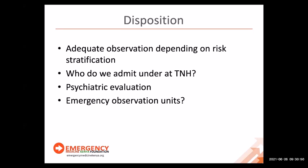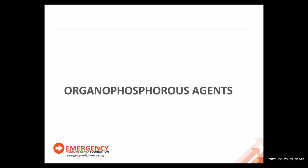For disposition, observe patients adequately depending on risk stratification. Determine whether they are admitted under physicians, emergency physicians, or go to ICU if intubated. Consider emergency observation units or short-stay units — a poisoned patient should not go to a ward where obs are only every four hours. They should be somewhere with more regular monitoring and a clear decision-making process.